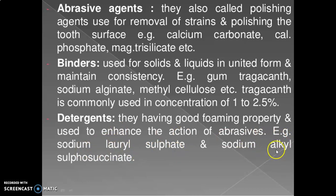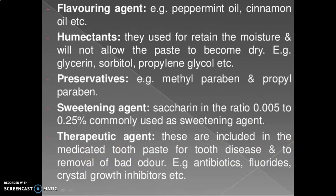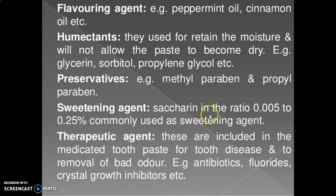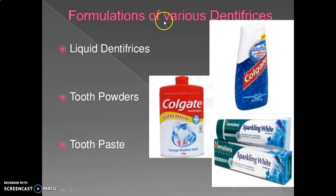Detergent examples include sodium lauryl sulfate (SLS) and sodium alkyl sulfosuccinate. Flavoring agents include peppermint oil and cinnamon oil. Humectants are used to retain moisture and prevent the paste from drying out; examples include glycerin, sorbitol, and propylene glycol. Preservatives include methylparaben and propylparaben. Sweetening agent: saccharin, used at a ratio of 0.005 to 0.25 percent. Therapeutic agents are included in medicated toothpaste for tooth disease and removal of bad odor; examples include antibiotics, fluorides, and crystal growth inhibitors.